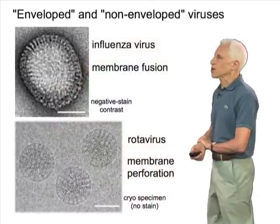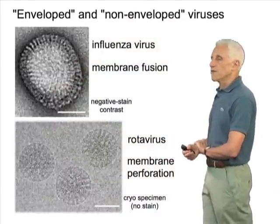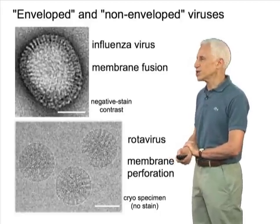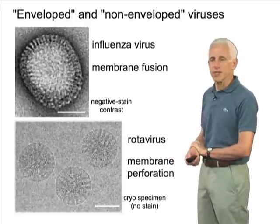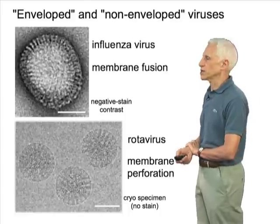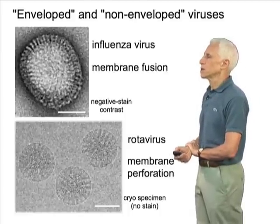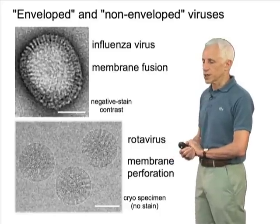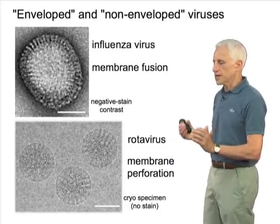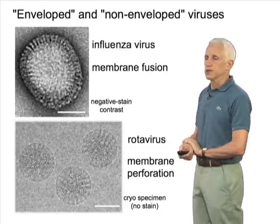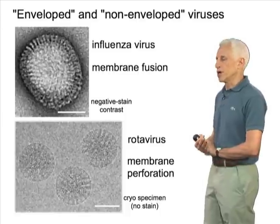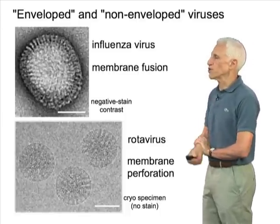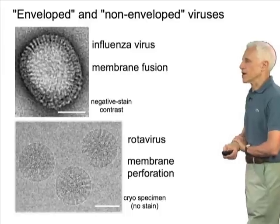As you'll recall, viruses come in two major flavors: enveloped viruses with lipid bilayers, like influenza virus—that was the subject of part two—and non-enveloped viruses, which have a tightly fitting protein coat to protect the nucleic acid but no lipid bilayer, such as rotavirus, which we'll be talking about largely today.